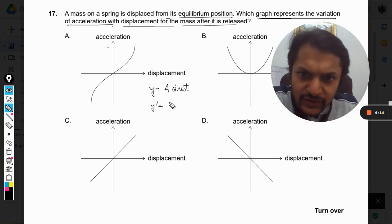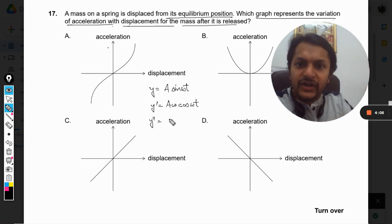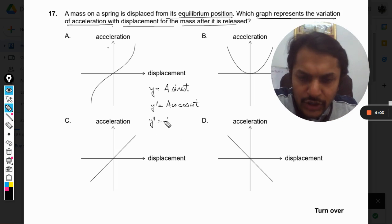Now what will be the velocity? The velocity will be, when you differentiate it, a omega cos omega t. And similarly, if you differentiate it even further one step more, you would be getting minus a omega square sine omega t.